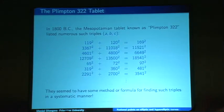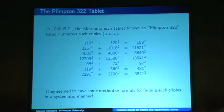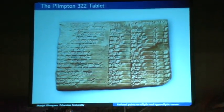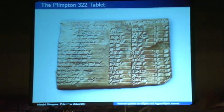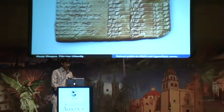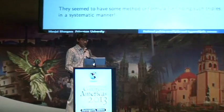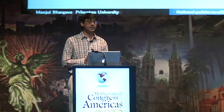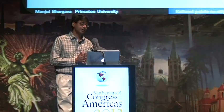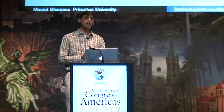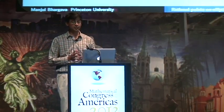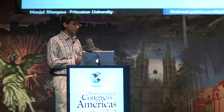They were looking for square values of A² + B² and found many solutions. Here's what the tablet actually looks like — it's kept at the Columbia University Museum, known as the Columbia 322 tablet. Many other cultures after 1800 BC found explicit methods of finding solutions to A² + B² = C², including in India, China, and also in southern Mexico and Central America in the long-counting calendar of the Mayans. Pythagorean triples were known in the Americas prior to the Greeks as well.